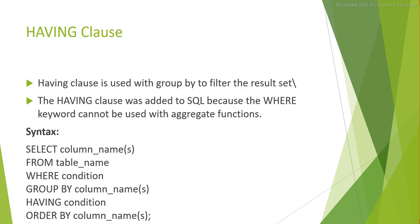So let's start with the HAVING clause. The HAVING clause is basically similar to the WHERE clause. What the WHERE clause does is it filters out records from the complete dataset. Similarly, if you want to filter out some grouped or aggregated data, then we use the HAVING clause. The HAVING clause is always used on aggregate functions only — it cannot be used on normal columns.